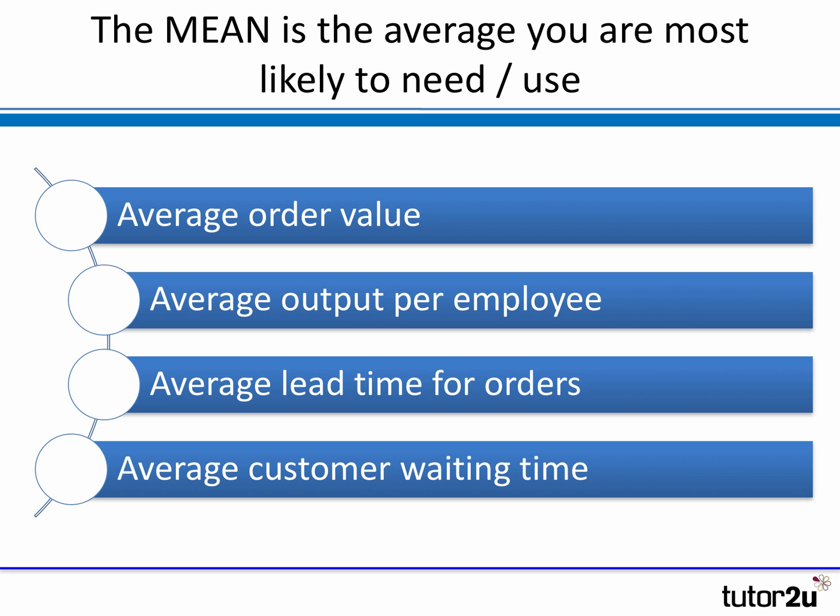And there are lots of different ways you can come across or use this in business. For example, it could be that a business is interested in the average value of how much each customer buys each time they visit the shop or buy online. It could be that operations and production people are interested in the average output per employee or per machine. The person running the warehouse or production line might be interested in the average lead time or delay it takes for suppliers to provide the goods ordered. And anyone looking at customer service would definitely be interested in the average time customers have to wait between placing their order and receiving the goods. So averages are widely used in business, and the mean is the simplest and easiest to understand.